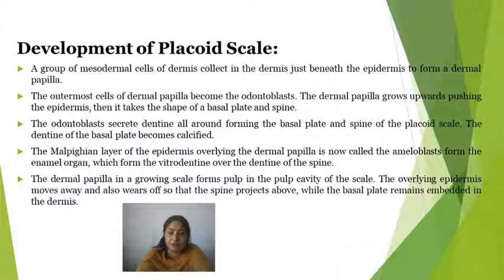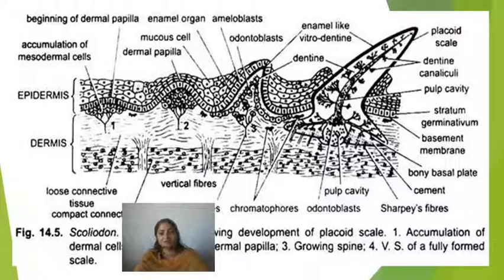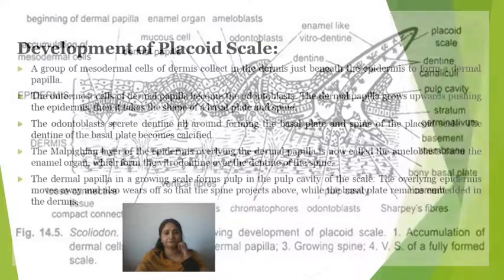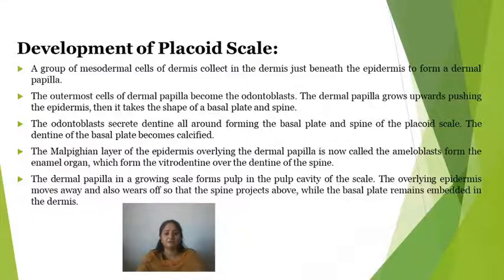The outermost layer of the dermal papilla becomes odontoblasts. The dermal papilla grows upward, pushing the epidermis, and then takes the shape of a basal plate and spine. The dermal papilla functions as odontoblasts and secretes dentine, forming both the basal plate and spine. The basal layer of the epidermis overlying the dermal papilla is now called amyloblasts, forming the enamel organ, which forms the vitrodentine over the dentine of the spine. The dermal papilla becomes the pulp in the pulp cavity of the scale. The overlying epidermis moves away and wears off so that the spine projects above, while the basal plate remains embedded in the dermis.